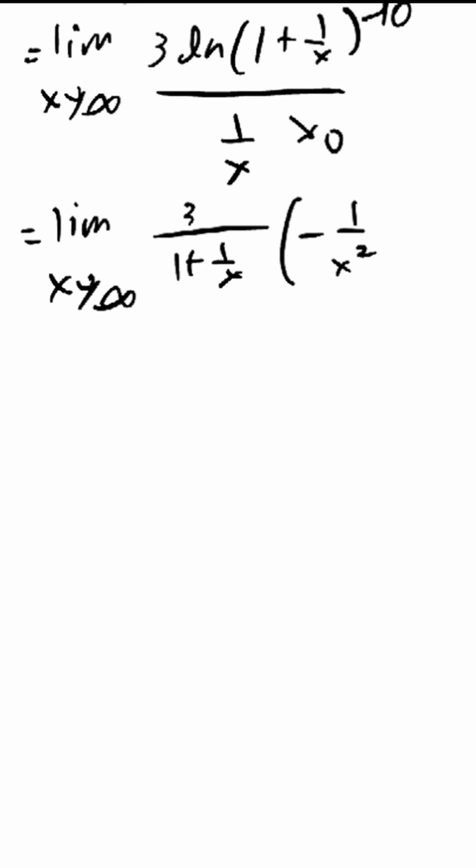We need a chain rule here, so the derivative of 1 plus 1 over x is negative 1 over x squared. You can do that by yourself if you would like to try and see how I got there so fast. And of course, the denominator is also negative 1 over x squared.